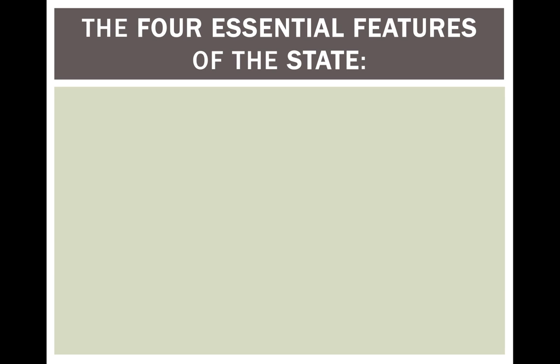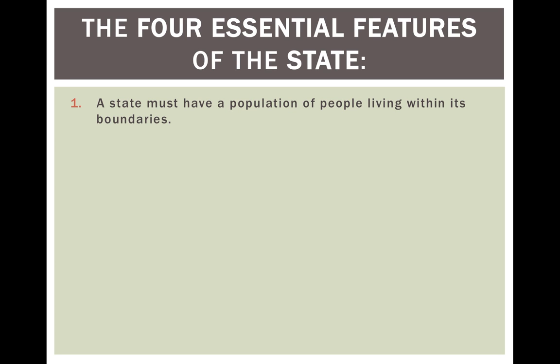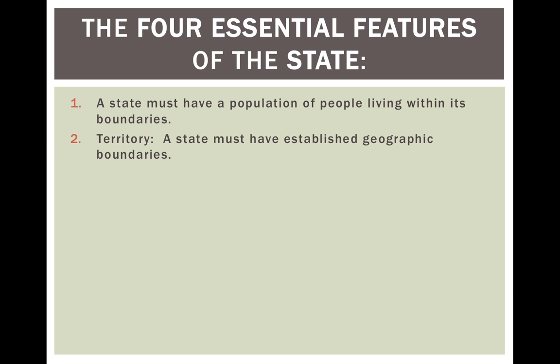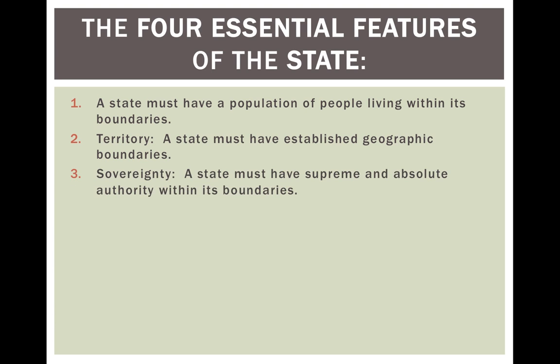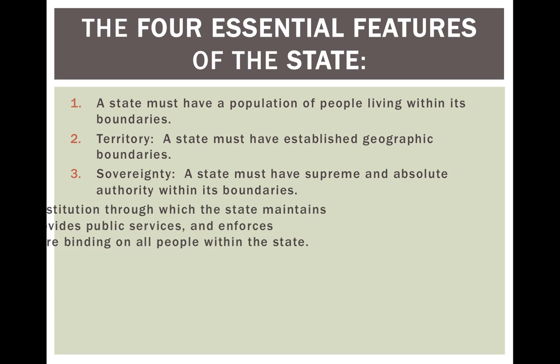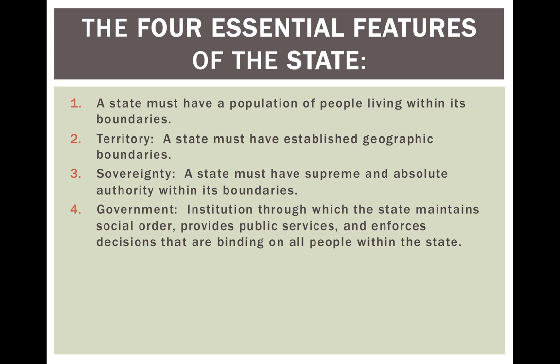So what are the four essential features of the state? One, a state must have a population of people living within its borders — no people, no state. Two, a territory: a state must have established geographic boundaries. Three, sovereignty: a state must have the supreme and absolute authority within its boundaries. And four, government: an institution through which the state maintains social order, provides public services, and enforces decisions that are binding on all people within the state.